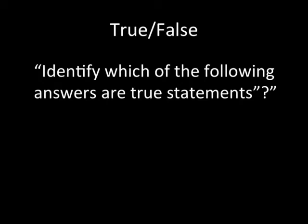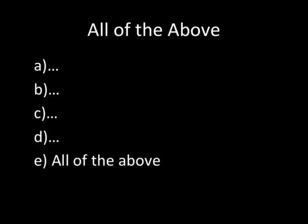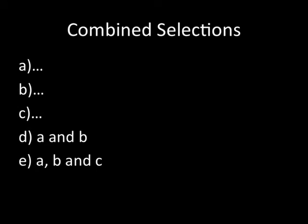If national exams don't use these formats, we shouldn't either. Don't use 'all of the above.' We all know that if we see that A and B are true, we just skip to E and select 'all of the above' without thinking about C and D. An old exam type used answers formatted as A, B and C / A and B / A, B and C only / and so on — don't use these either.